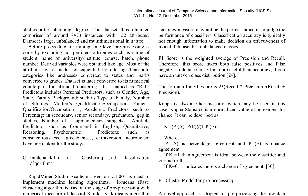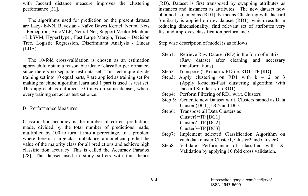Predictors used in the study encompass personal, family background, academic, aptitude, and psychometric predictors. RapidMiner Studio Academia version 7.1.001 is utilized to implement machine learning algorithms. Kaemon's fast clustering algorithm is applied with a numerical measure of Jaccard similarity, enhancing clustering performance. Various classification algorithms are employed for prediction, including LazyCan, Bayesian Naive Bayes Kernel, Neural Nets, Perceptron, AutoMLP, Neural Net, Support Vector Machine, LibSVM, HyperHyper, Fast Large Margin, Decision Tree, Logistic Regression, and Discriminant Analysis Linear (LDA).